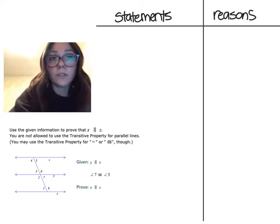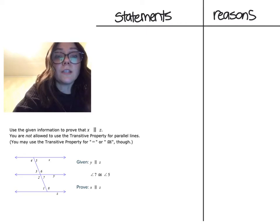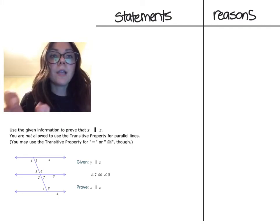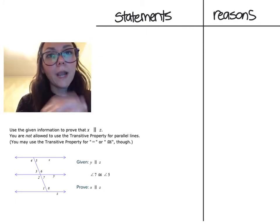And it's converse, which states that if corresponding angles are congruent, then your lines are parallel. We're actually going to be using maybe not necessarily that angle pair, but both types of theorems in this proof. So this will be a good practice.